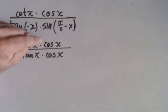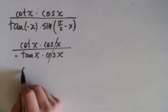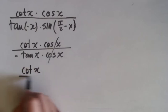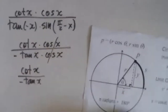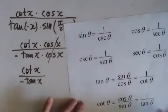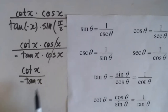Now cosine divided by cosine cancels. So I cancel these two. So I have cotangent of x over negative tangent of x. Now, cotangent divided by tangent — let's see how cotangent and tangent are related. Tangent is the reciprocal of cotangent, cotangent is the reciprocal of tangent.